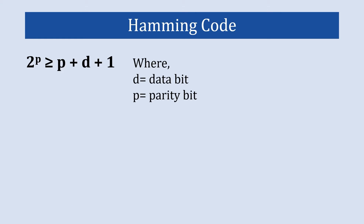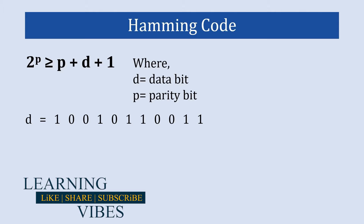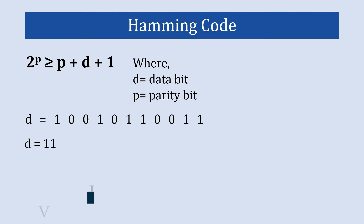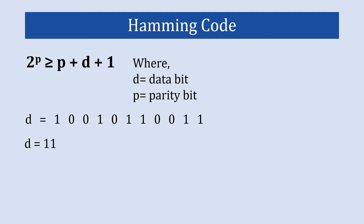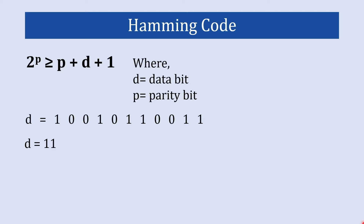Let's understand this equation with an example. Say we want to send 11-bit data, so d equals 11. In our entire Hamming code, 11 bits will be used for data. We need to find how many parity bits p we need to send along with this data to form a complete Hamming code. The actual value of p is whichever value satisfies the equation.